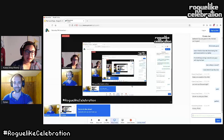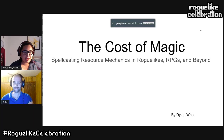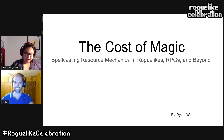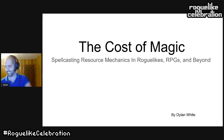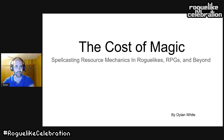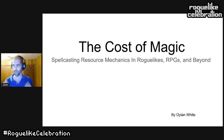Our next speaker is Dylan White, talking about Rift Wizard, the programming designer behind it, discussing the cost of magic and what mechanics lead to interesting gameplay in magic systems. I'm Dylan White, a roguelike programmer and designer who recently released a game called Rift Wizard. This is a 15-minute lightning talk, so I have to focus on one specific thing: the cost of magic — spellcasting resource mechanics in roguelikes, RPGs, and beyond.